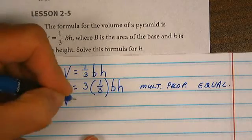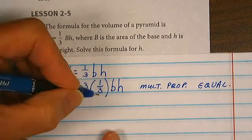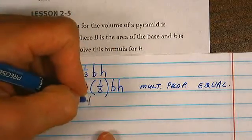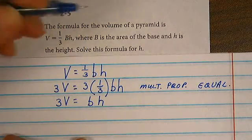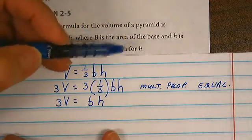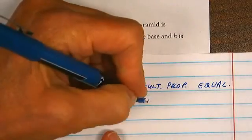3V is equal to 3 times one-third, which is 1, times the base times the height. What do I want? And here to here I just simplify.